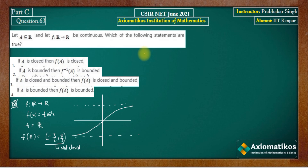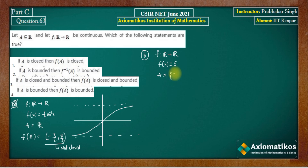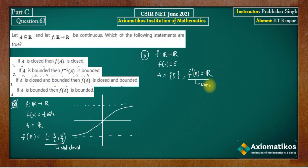Now moving to the next option: if a set A is bounded, then the pre-image of A is also bounded. Note carefully where this is going — the A being discussed here is in the domain and we need to apply the pre-image operator. It is not bounded, so option B is also incorrect.